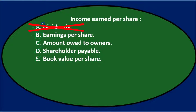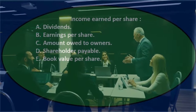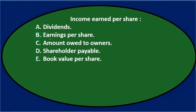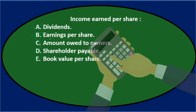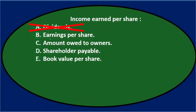Dividends is not the answer because, although earnings per share basically takes net income and divides it by the number of shares, it doesn't necessarily mean the company is going to pay dividends — that could be a common misconception. The corporation could keep the earnings per share in order to generate more revenue in the future. Final answer: income earned per share — B, earnings per share.